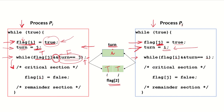Now let's see what happens in process PJ. Its while condition checks: flag[i] AND turn == i. Flag[i] is true, and the final value of turn is i, so turn == i is also true. True AND true gives true, so process PJ is stuck in the while loop, repeatedly checking these conditions. Process PI has entered the critical section, but process PJ cannot enter and keeps waiting.